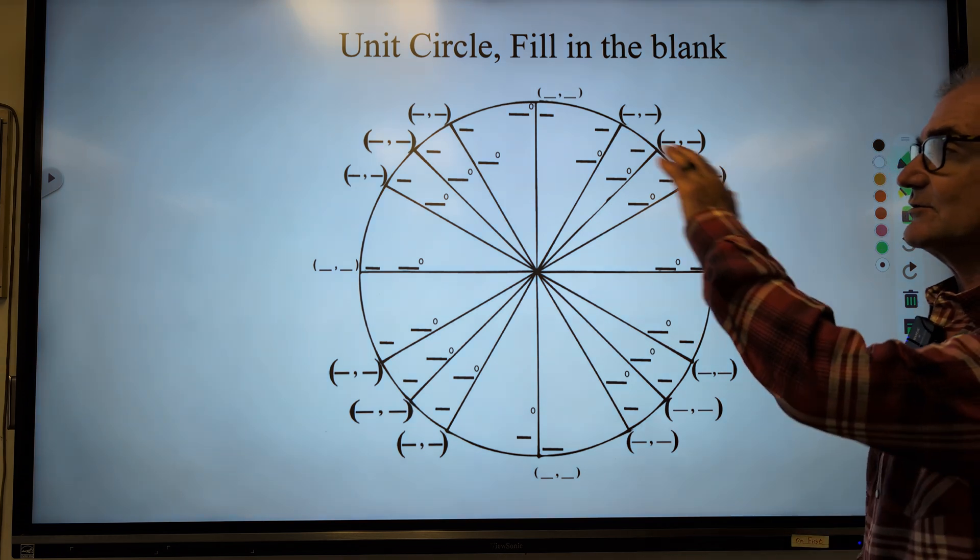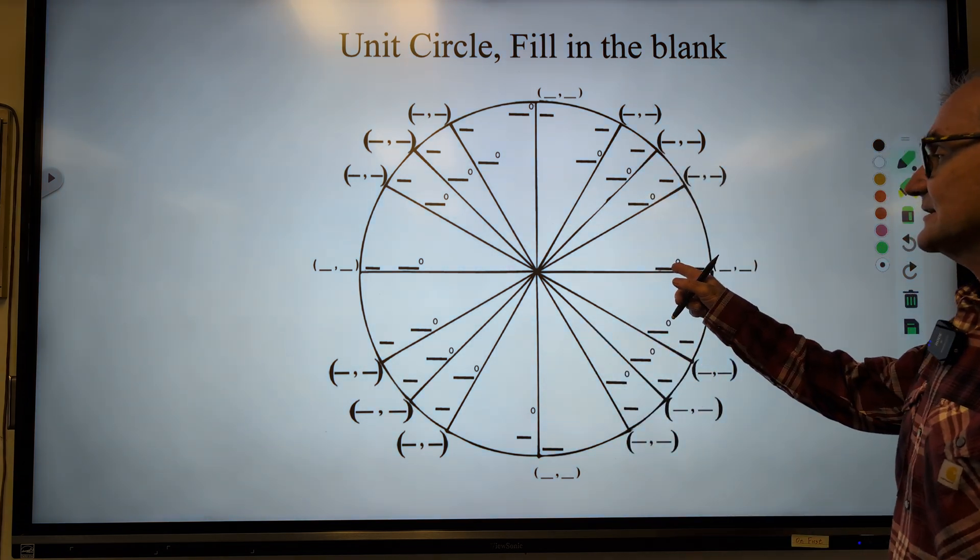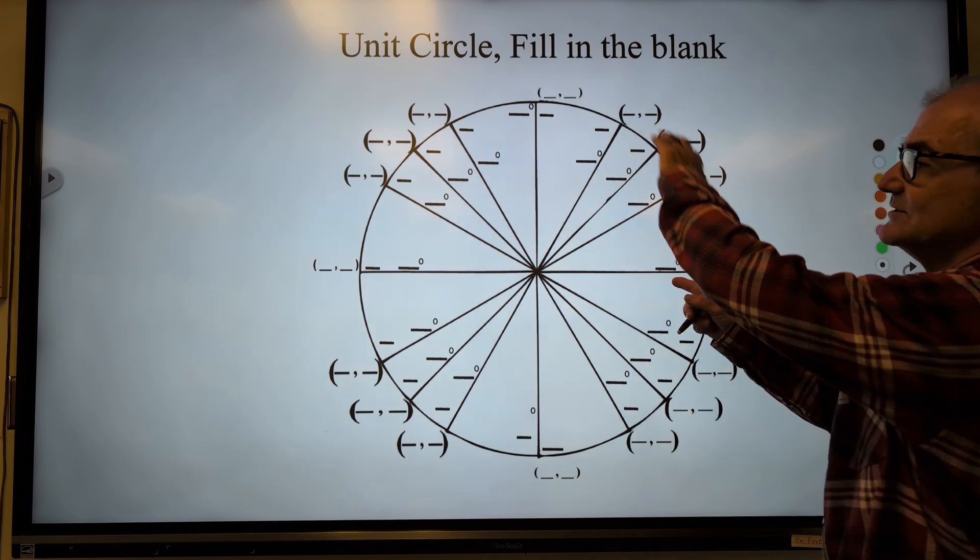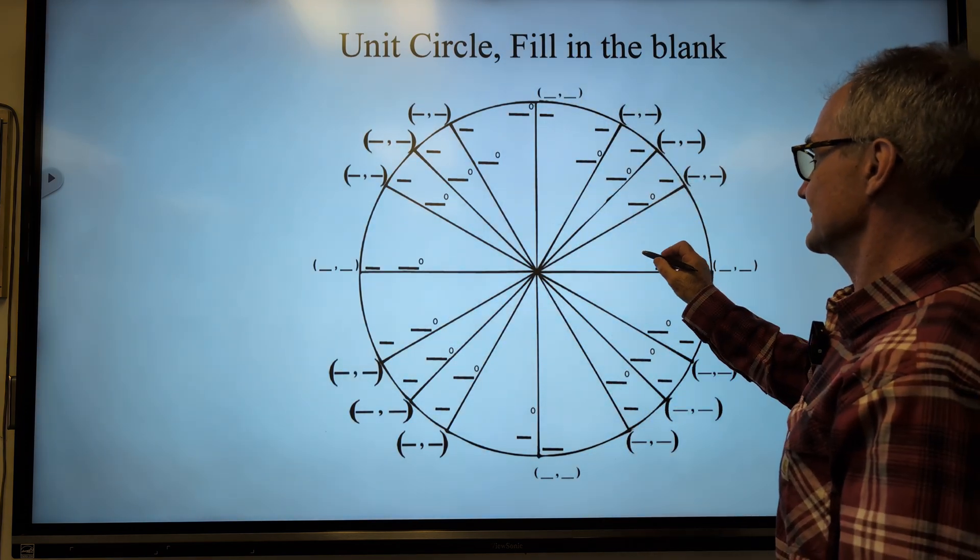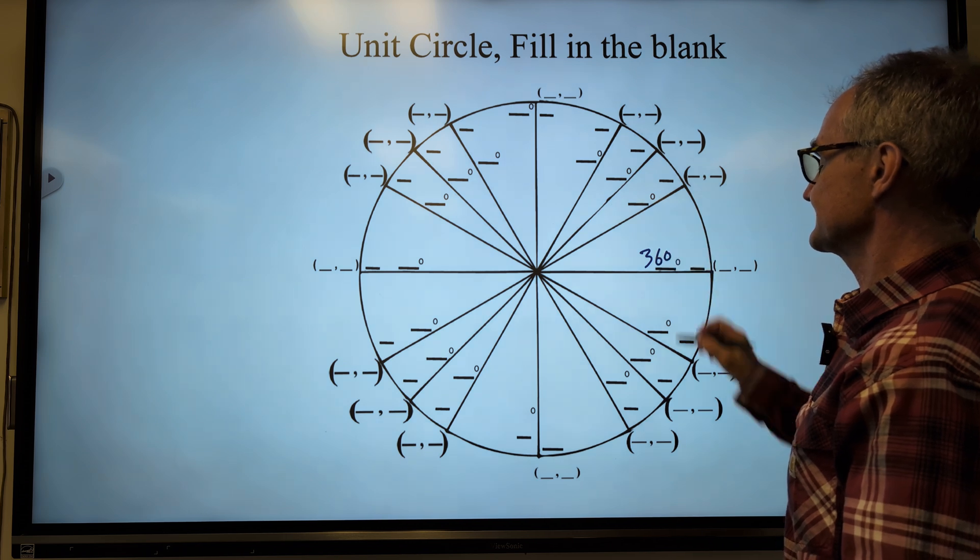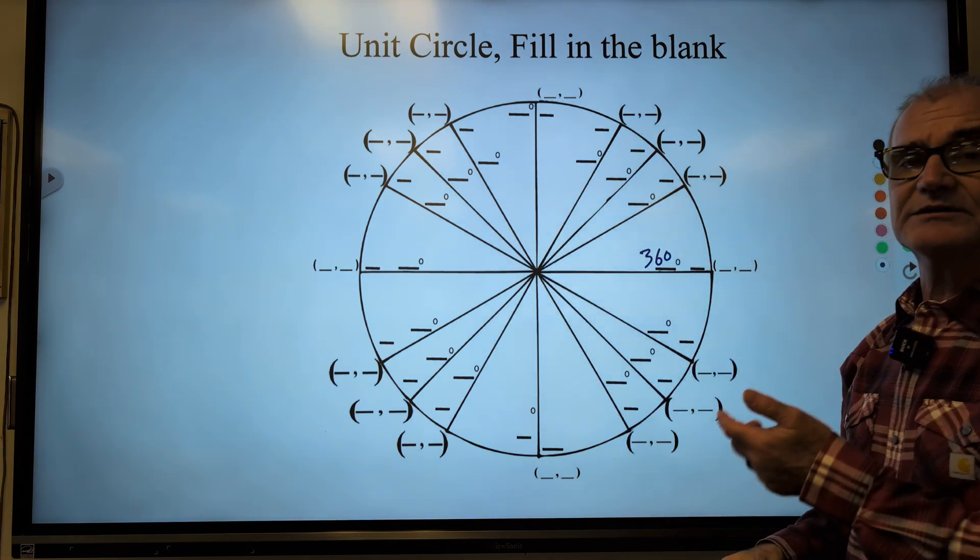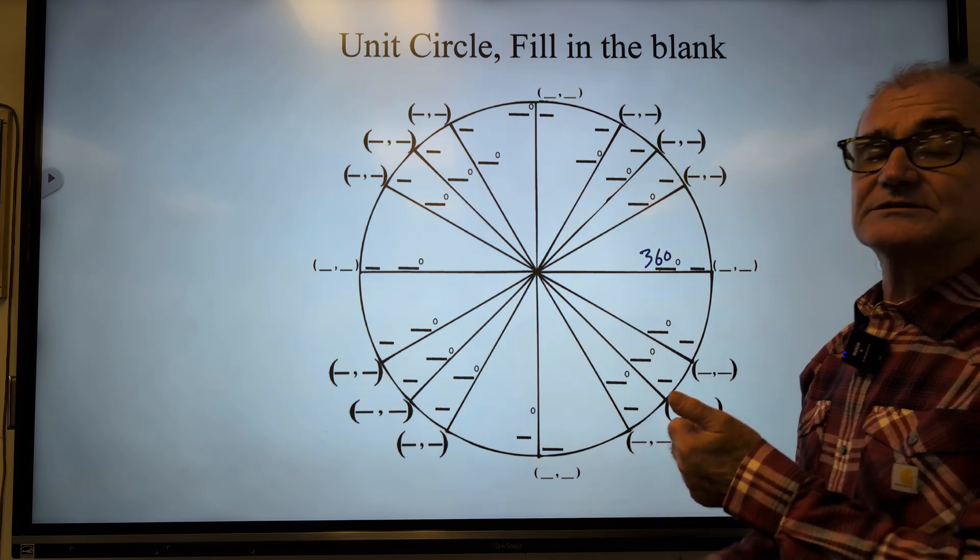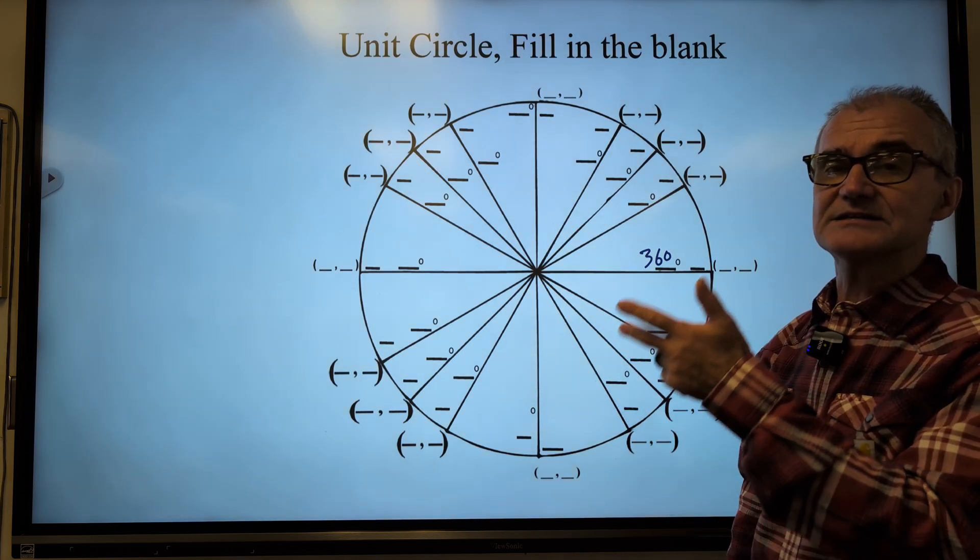First thing I'm going to do is go all the way around the circle in degrees. So I'm starting it right here at zero degrees. I rotate counterclockwise and I go all the way around to get 360 degrees. And then every increment there forward is going to be one of three measures. 360 is divisible by 30, 45, 60, and 90.